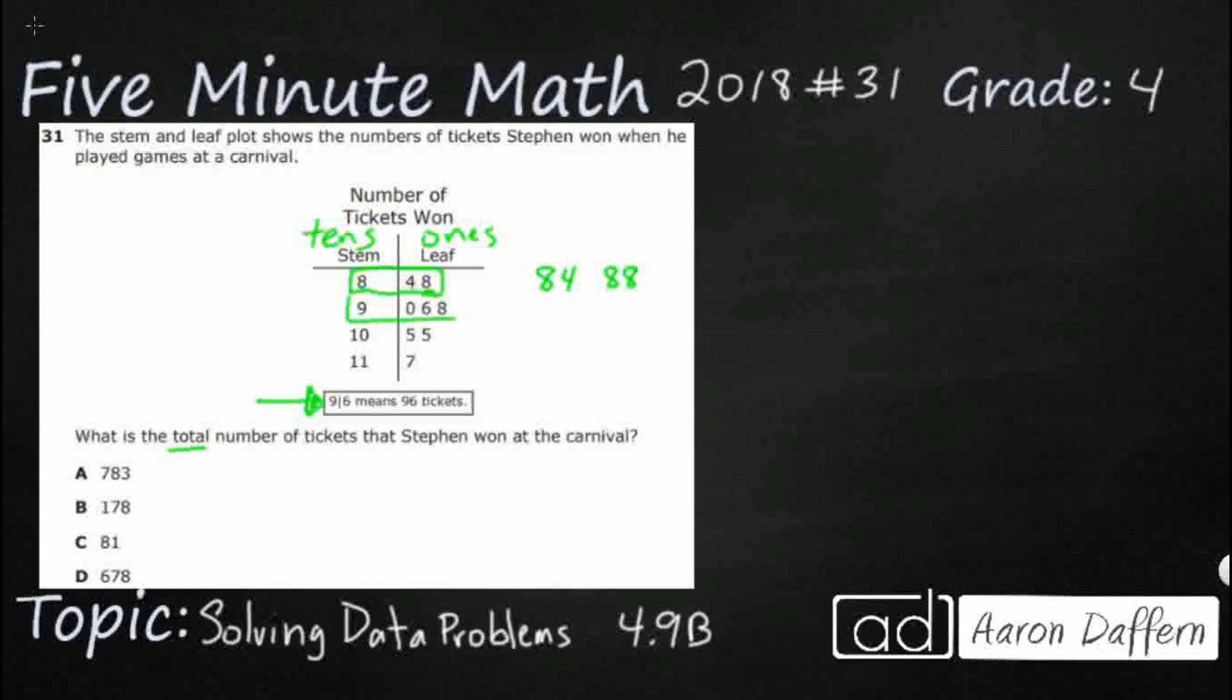So this second row here has three leaves, which means we actually have three numbers or three quantities. So we're gonna have 90 because we've got a stem of 9, a leaf of 0. We still go back to that same stem of 9 to pick up our second leaf of 6. And then we go back to that same stem of 9 to pick up our leaf of 8.